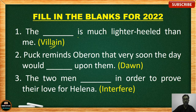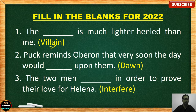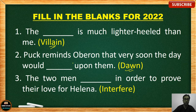The blank is much lighter heeled than me — the correct answer is 'villain.' Number 2: Puck reminds Oberon that very soon the day would blank upon them. The correct answer is 'dawn.' Very soon the day would dawn upon them.